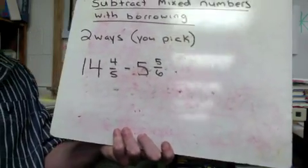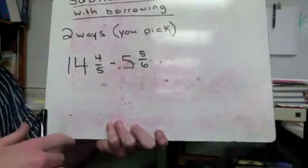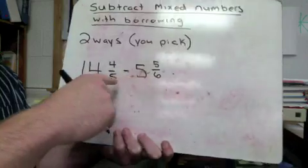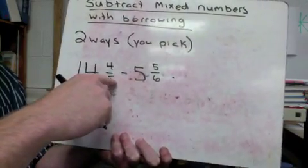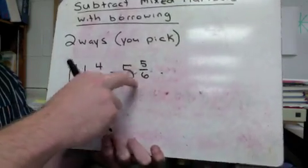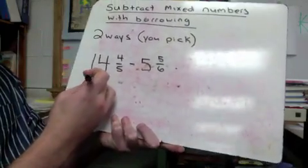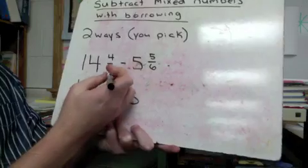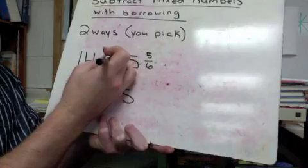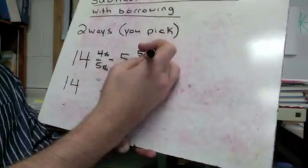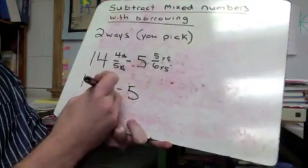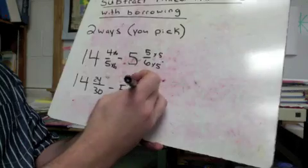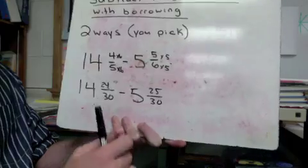Fourteen and four-fifths minus five and five-sixths. I know that five-sixths is bigger than four-fifths — if you had a pizza cut into six slices and got five pieces, you get more pizza than cutting into five and only getting four. So that tells me we'll have to borrow because we're taking away more than what we have. Let's get common denominators first. Five and six — we'd probably want to use thirty. That would be times six, and times five. So that leaves us thirty and twenty-four, and over here twenty-five and thirty.